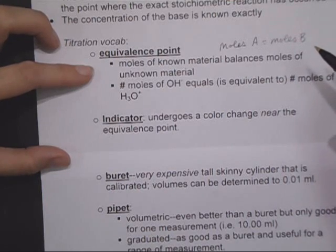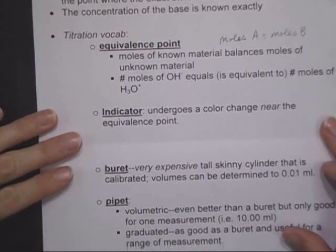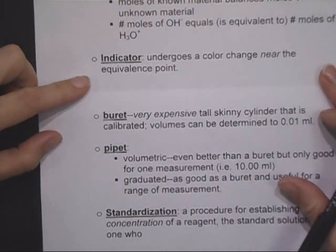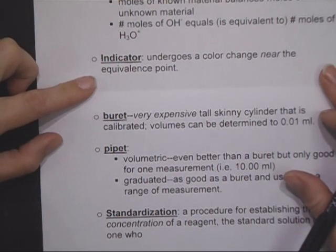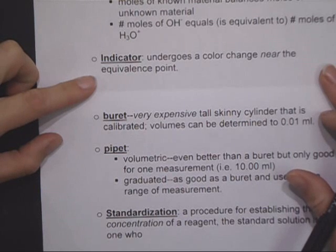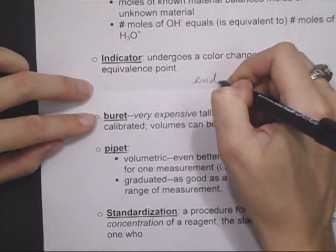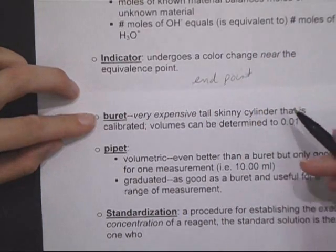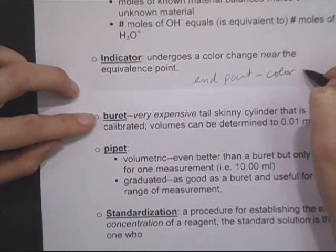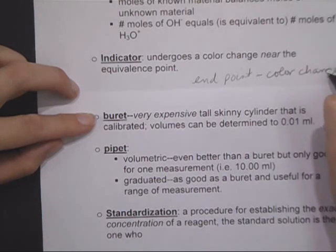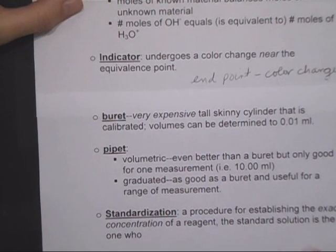Most of the time we can't measure the equivalence point because it changes so quickly away from the equivalence point. So we have to use an indicator, which is typically some kind of a color change that tells us that we are at or near the equivalence point. The equivalence point and the endpoint are a little bit different. The endpoint is where we get the color change, and it tells us we can stop adding our titrant. But the equivalence point is where you really truly have equal number of moles of acid and base or reactant and product.